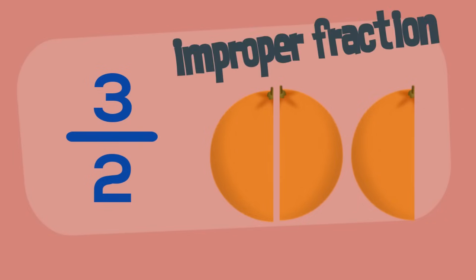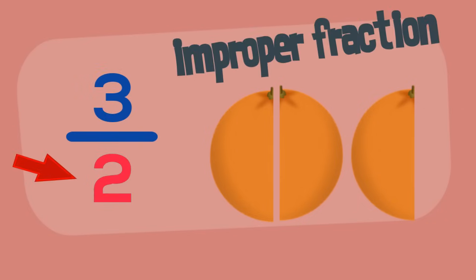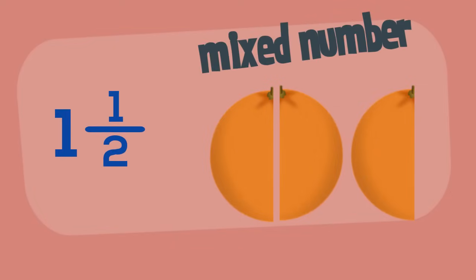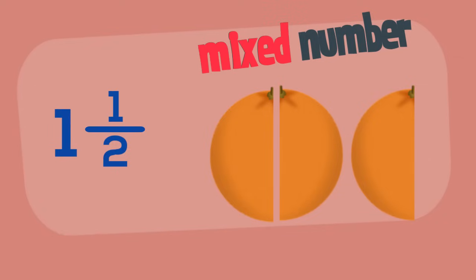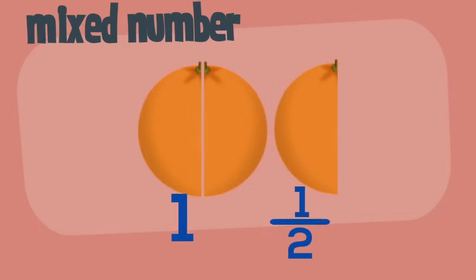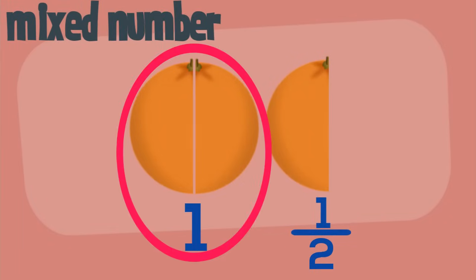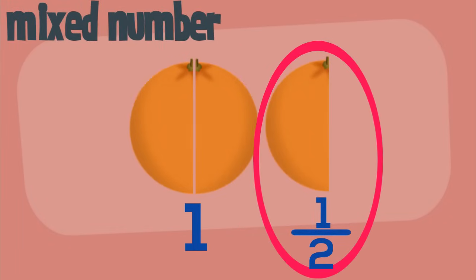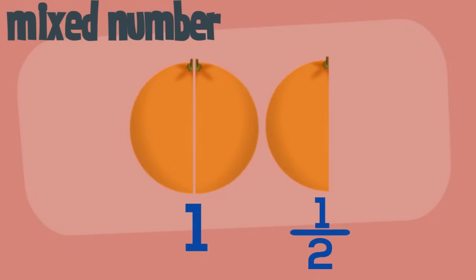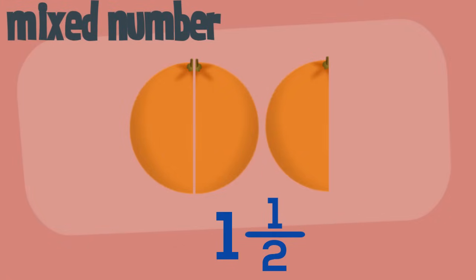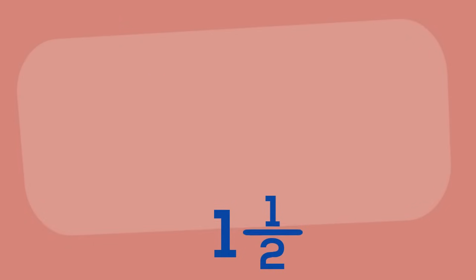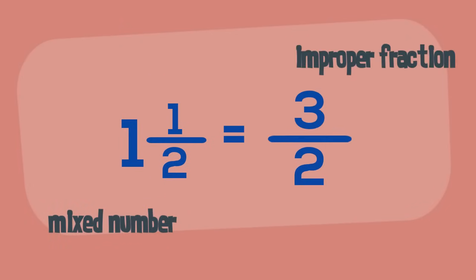Three-halves is an improper fraction. Improper fractions have a numerator larger than their denominator. An improper fraction can also be expressed as a mixed number. It's called a mixed number because it's a mix of a whole number and a fraction. How many wholes do we have? One. How many extra halves do we have? One. One whole and one half — the mixed number is one and a half.